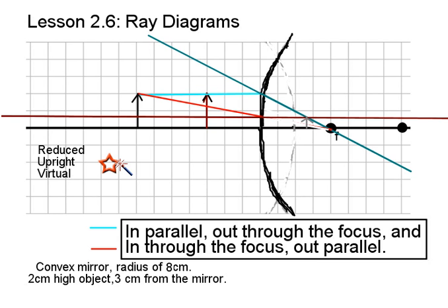Concave mirrors can give us all kinds of weird and wonderful images that can be real or virtual, magnified or reduced, upright or inverted. But convex mirrors are simpler. You will always get reduced, upright and virtual.